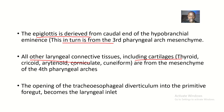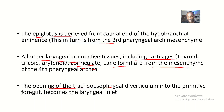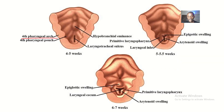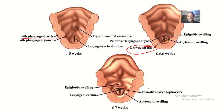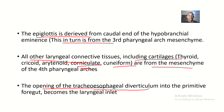Other laryngeal connective tissues, including the cartilages — the thyroid cartilage, cricoid cartilage, arytenoid cartilage, corniculate cartilage, and cuneiform cartilage — are from the mesenchyme of the fourth pharyngeal arches. The opening of the tracheoesophageal diverticulum into the primitive foregut forms the laryngeal inlet.